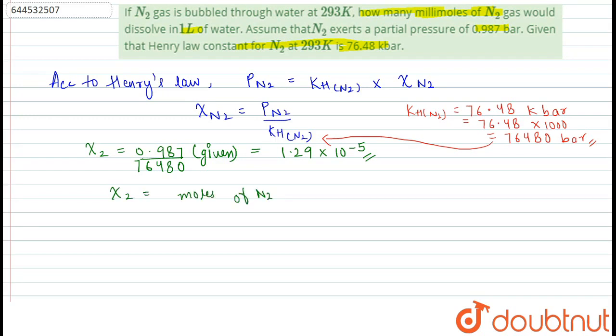Now, mole fraction is equal to moles of N2 divided by moles of N2 plus moles of H2O. That is the total number of moles in the solution.